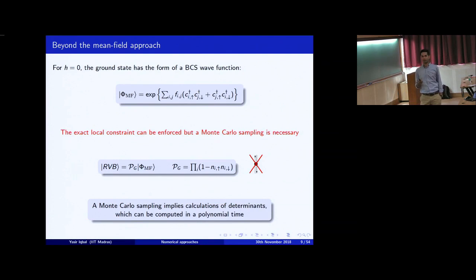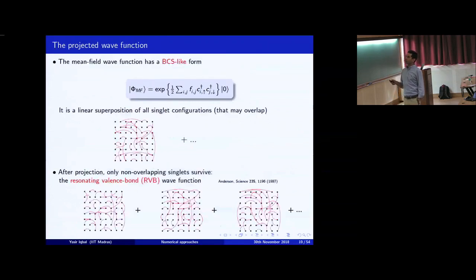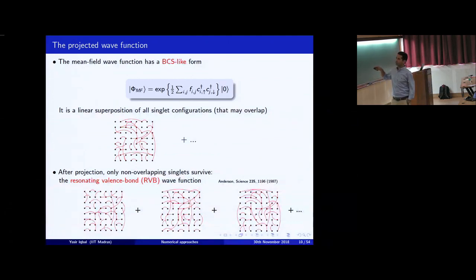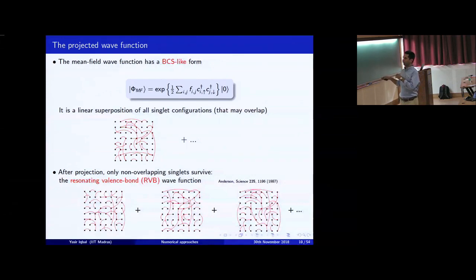This mean field wave function has the BCS form, and the pairing amplitudes give possibilities for all possible singlet coverings, which are of course overlapping before projection. The effect of the projection is that only non-overlapping coverings of the lattice survive, and you get a state with different amplitudes for different distances of these valence bonds.